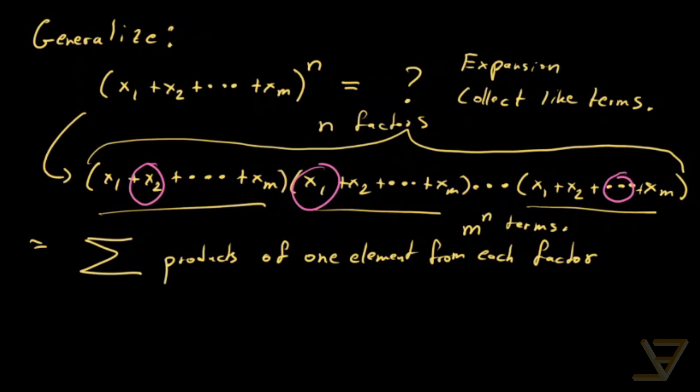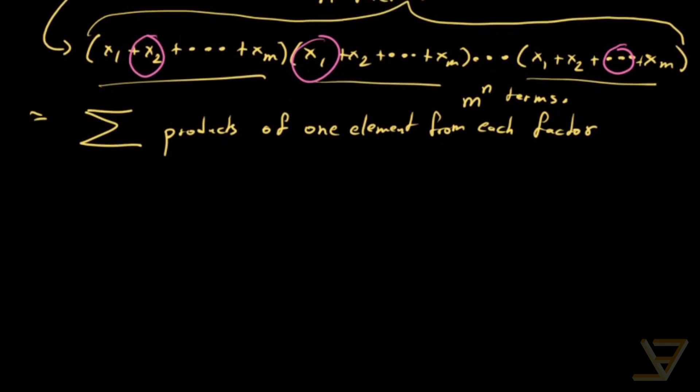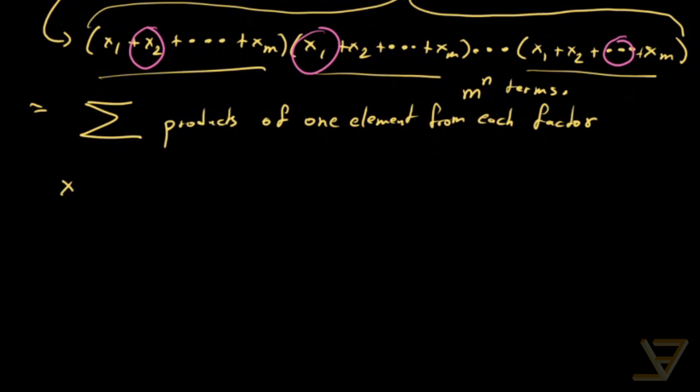Now the question is what happens when we collapse terms. For example, we might have x1, x1, x2, x3, x1. So what we're really looking at are permutations with repetitions. So there are some terms that are repeated and are indistinguishable from each other.